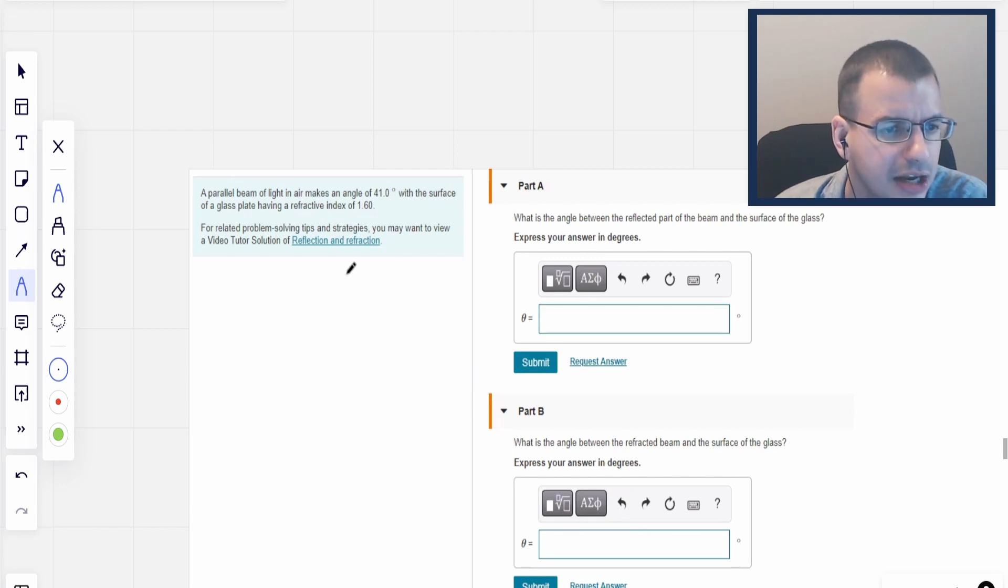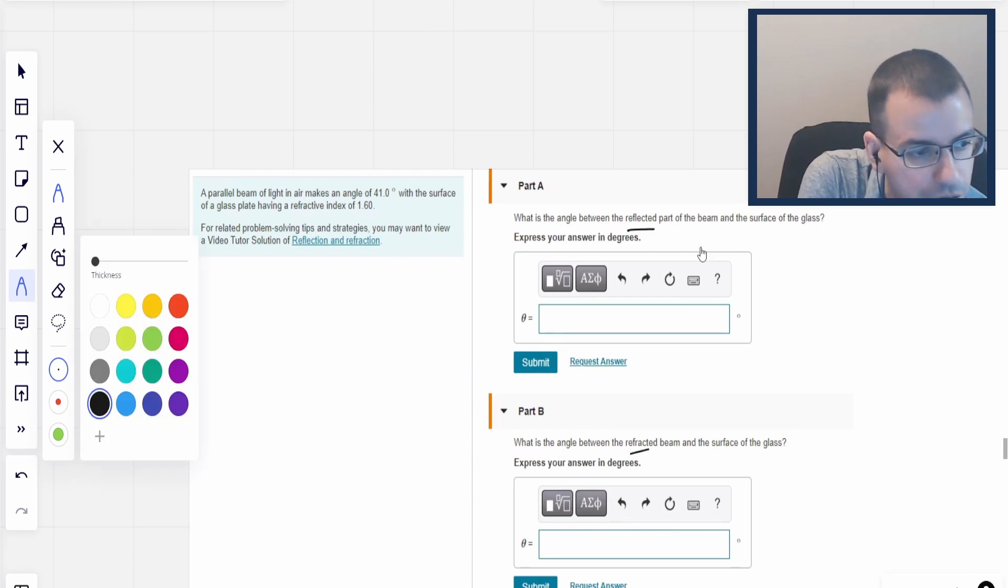A parallel beam of light in air makes an angle of 41 degrees with the surface of a glass plate having a refractive index of refraction of 1.6. What is the angle between the reflected part of the beam and the surface of the glass? What is the angle between the refracted beam and the surface of the beam? Reflected and refracted. All right, so that's the key point we're going to go for here.